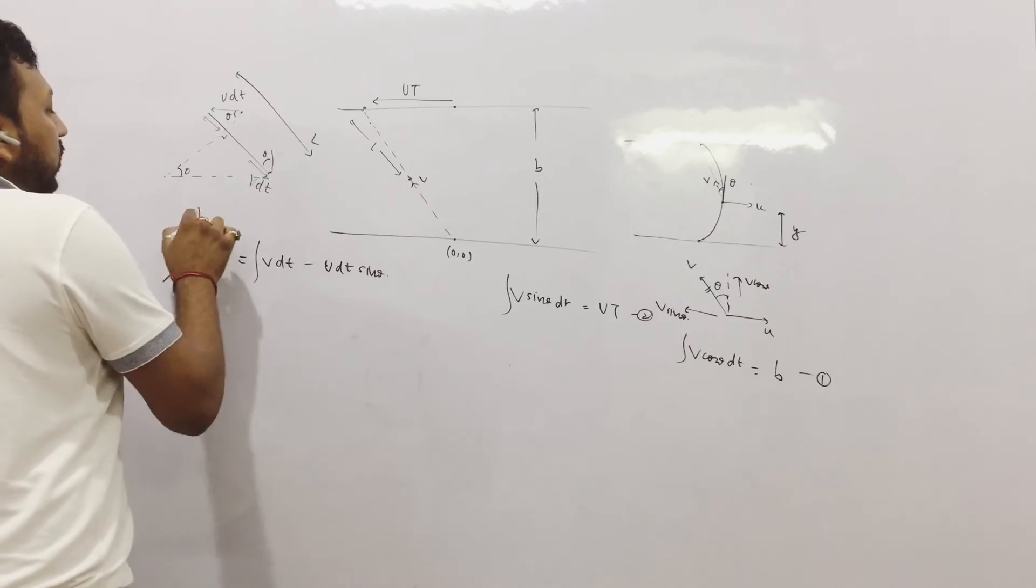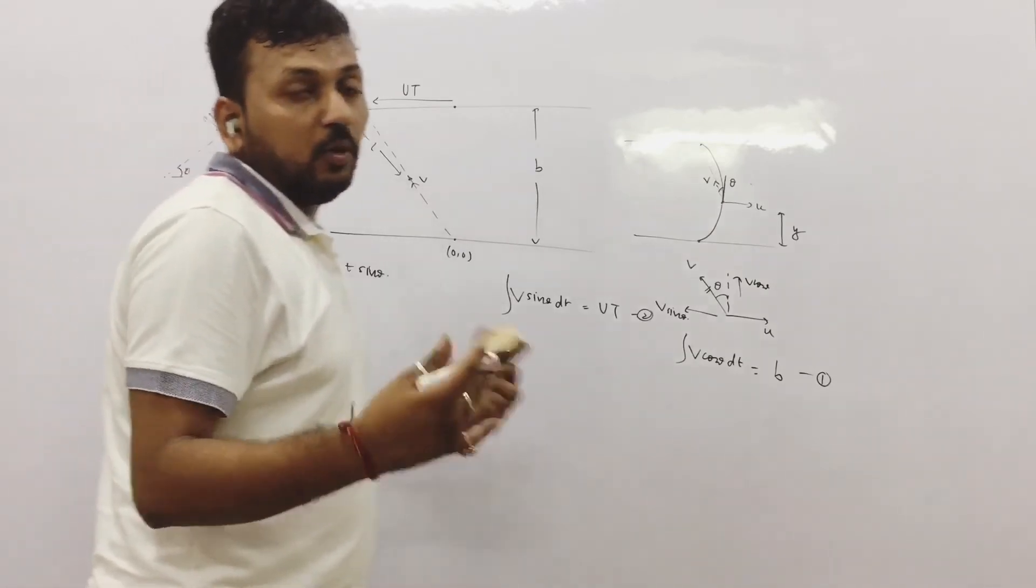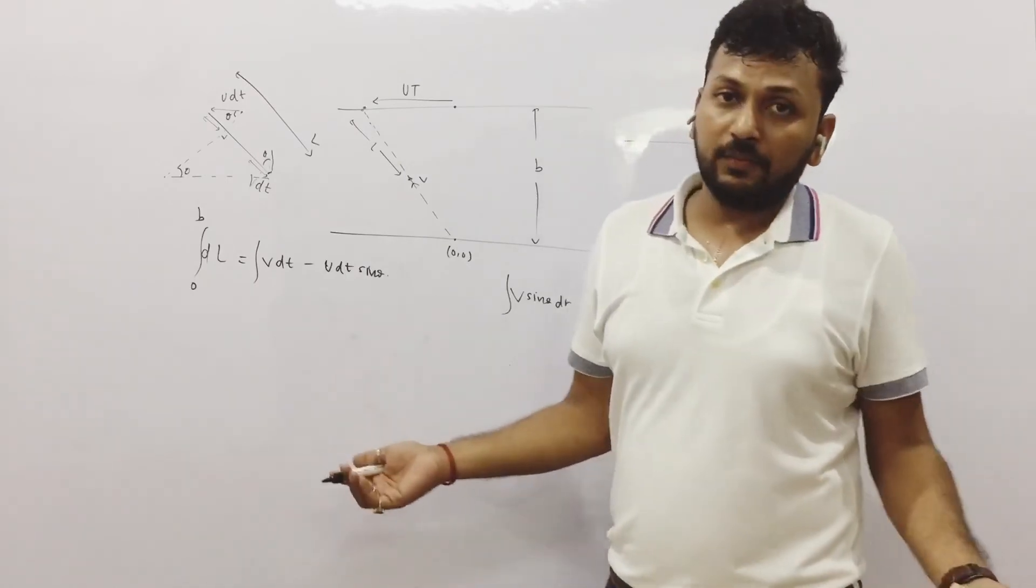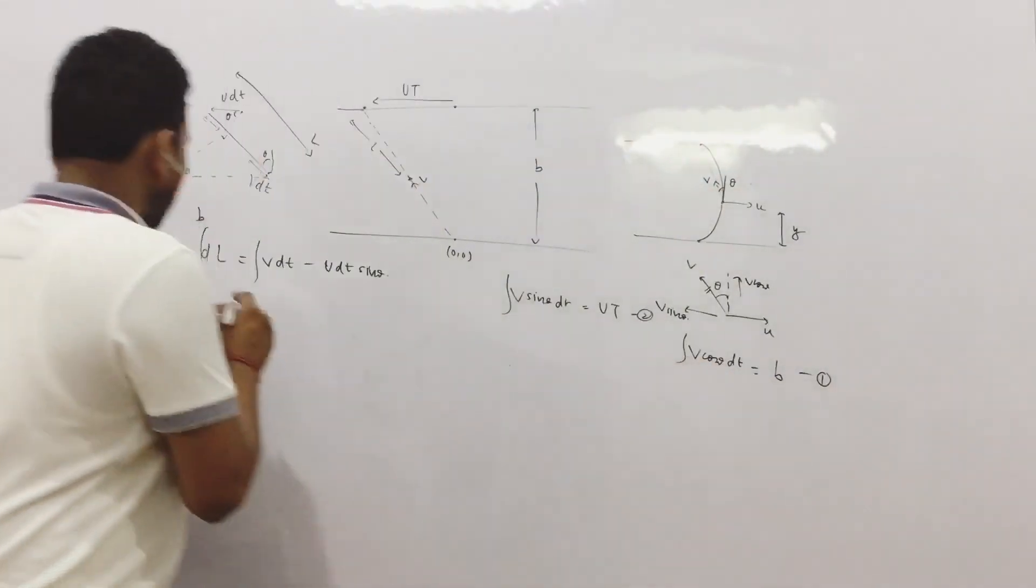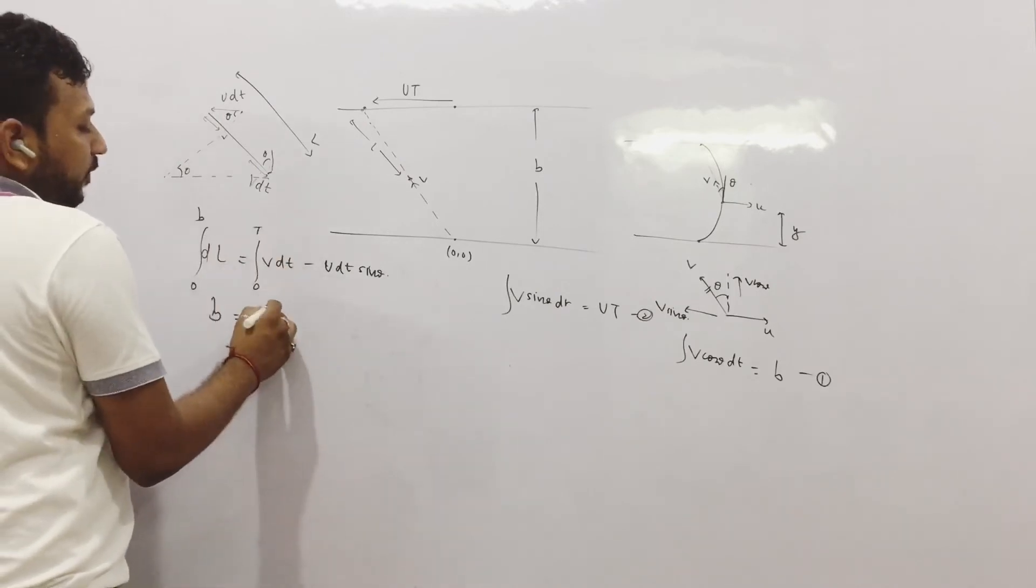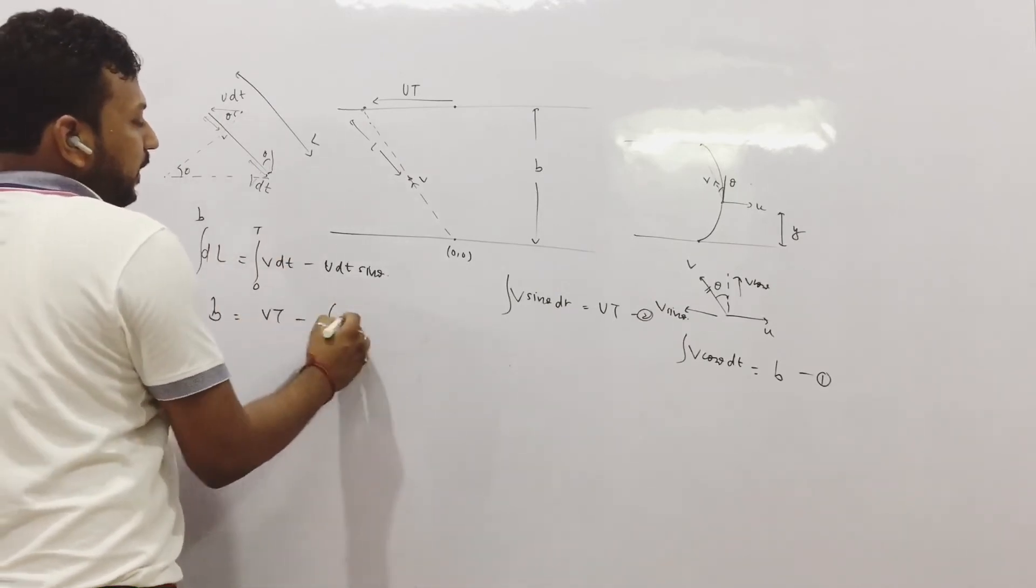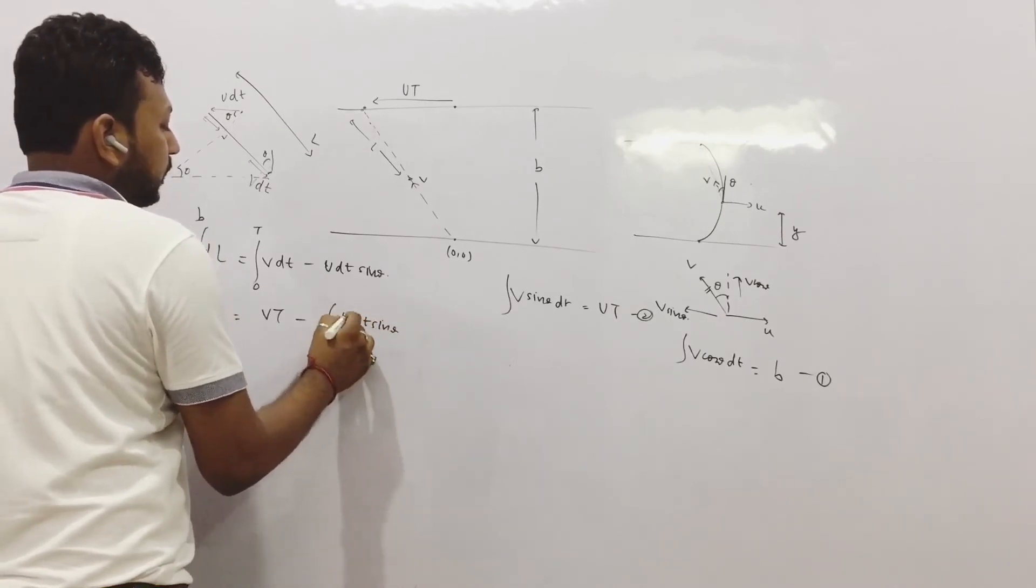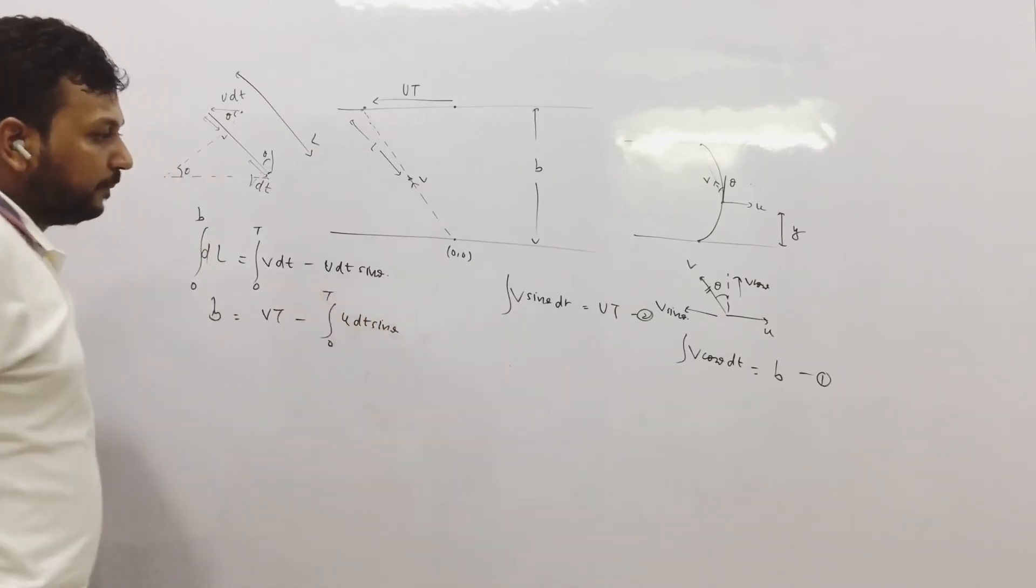Now let us solve and we have the answer. So dl went from 0 to b. So what was covered? Initially nothing was covered and finally the l distance b was covered. So we have b is equal to integration 0 to capital t v dt minus integration u dt sin theta from 0 to capital t.